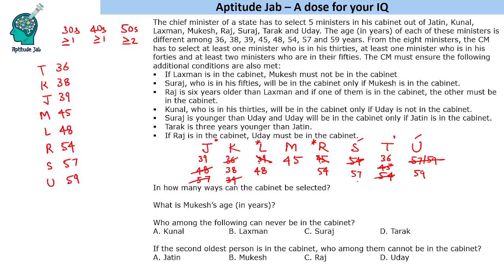The condition states that Raj is 6 years older than Lakshman, and if one of them is in the cabinet, the other must be too. So either both Raj and Lakshman are present, or neither is. Starting from this constraint reduces possibilities significantly: if neither is present, we select 5 from the remaining 6; if both are present, we only need 3 more from 6. Let us make 2 cases.